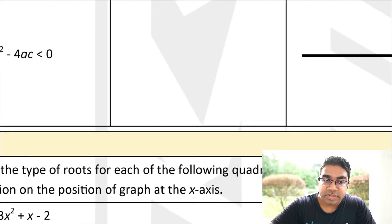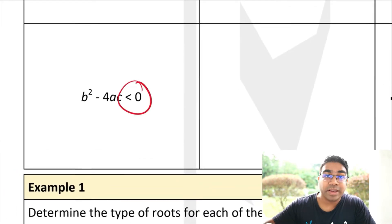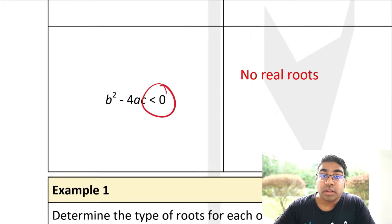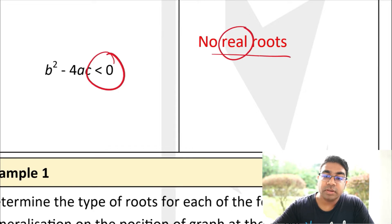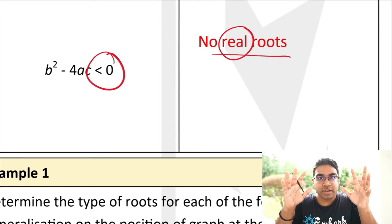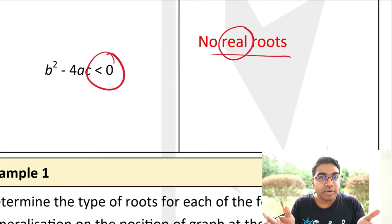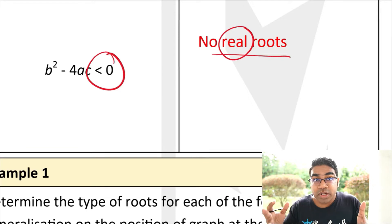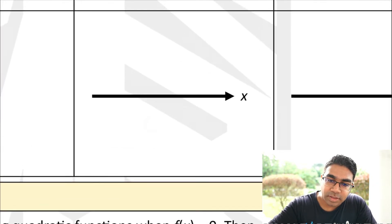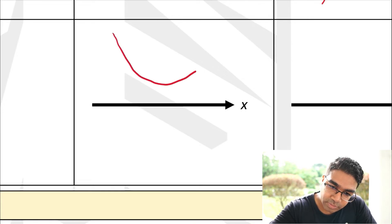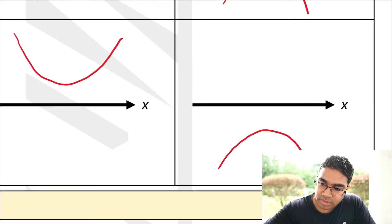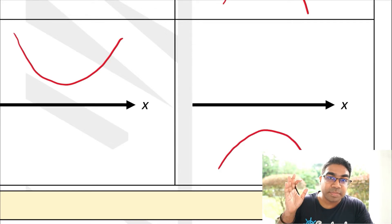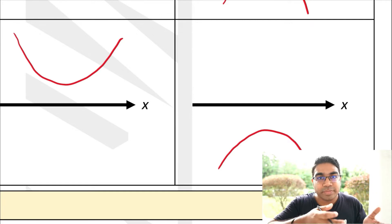What if the value of the discriminant is negative? You do b squared minus 4ac and get a negative value. A negative discriminant indicates there are no real roots. At high school level, you probably haven't learned imaginary numbers yet, so we simply say there are no real roots. That means the graph doesn't touch the x-axis at all — neither for a smile nor a frown.